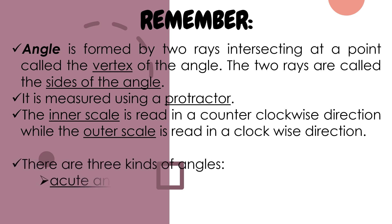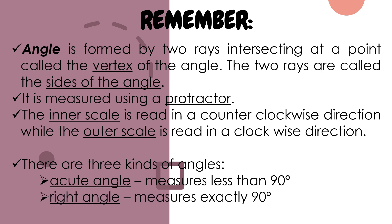There are three kinds of angles. First is acute angle whose measure is less than 90 degrees. Right angle has exactly 90 degrees. And obtuse angle measures more than 90 degrees.